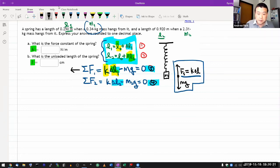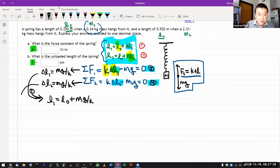Solving each of these for delta Ls, I get delta L1 equals M1 G over K. And solving this for delta L2, I get delta L2 equals M2 G over K. Let me plug that into one. Plugging into one, I get L1 equals L0, which is still unknown, plus M1 G over K. And plugging this into two, I get L2 equals L0 plus M2 G over K.